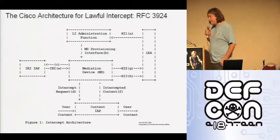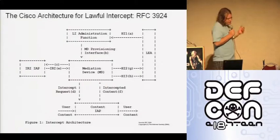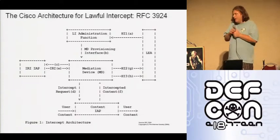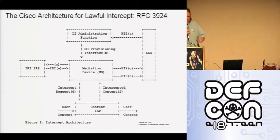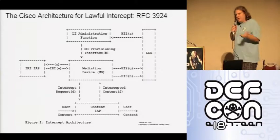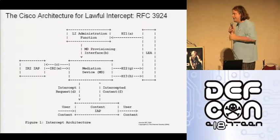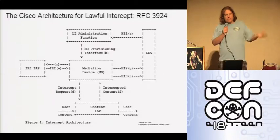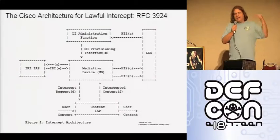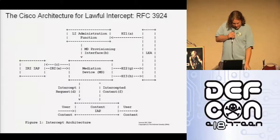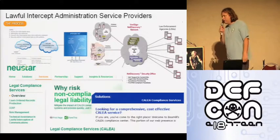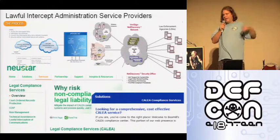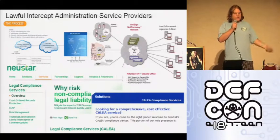Let's talk about the architecture. This diagram is from the RFC. Some entities are actual pieces of equipment and some are organizations of people. The LEA — the law enforcement agency — gets permission to wiretap a suspect and brings it to the ISP. The LI administration function is the ISP organization that handles this interface for law enforcement. They validate the warrant and provision the wiretap. You can actually outsource your lawful intercept administration function if you're a large ISP — there are companies that offer to hire lawyers and handle this service for you.